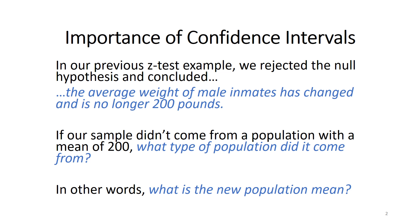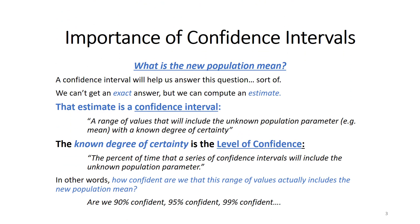In other words, what is the new population mean? A confidence interval will help us to answer that question — sort of. Because remember, we are working with sample data, and in the realm of inferential statistics, we're not going to get an exact answer. We're not going to get a 100% certainty answer, but we can compute an estimate of what the new population mean might be.